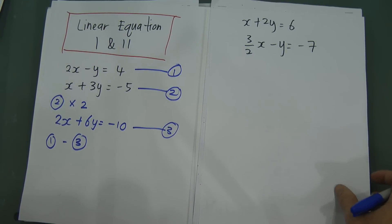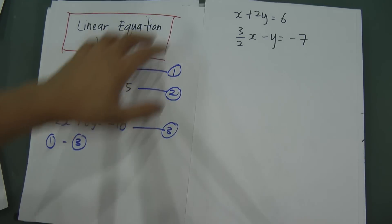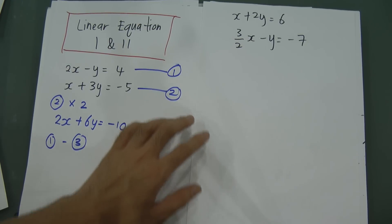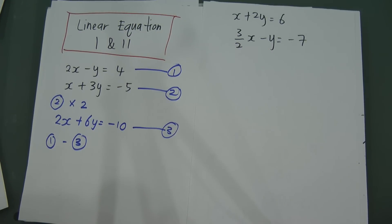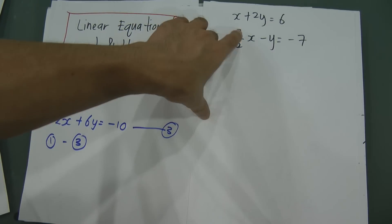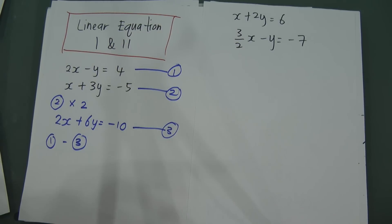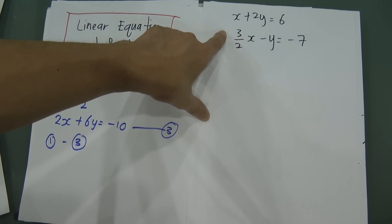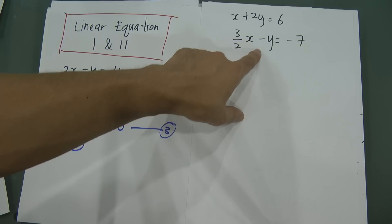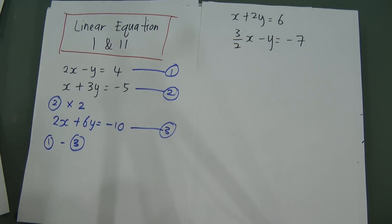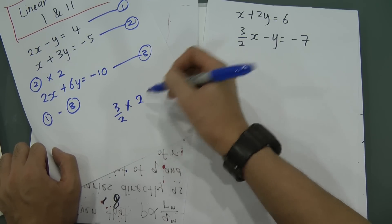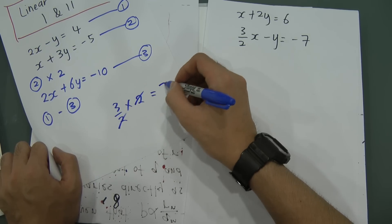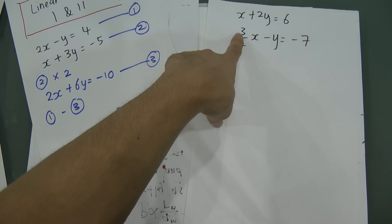Now let's look at the second question: x plus 2y equal to 6, and 3 over 2 times x minus y equal to negative 7. When you do linear equations and see a fraction, it will confuse a lot of students. What I suggest is: when you see a fraction, try to multiply 2 for everything to delete the 2 on the bottom. When you see 3 over 2 and you multiply 2, the 2's cancel and you're only left with 3.